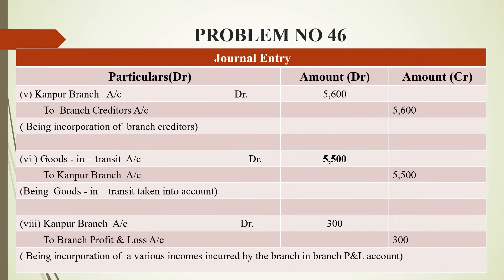The next one is the liability side. We have creditors, so we have to record branch creditors. This is the branch liability account. The journal entry is: branch account debited to branch creditors account.